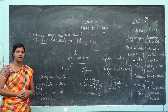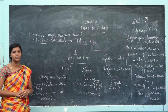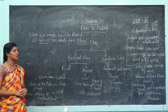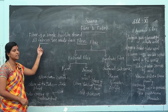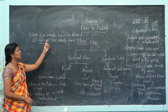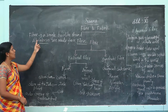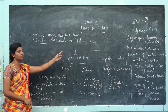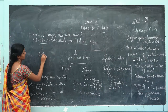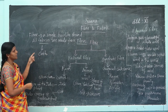Good morning students. In last class, we have learned about types of fiber and their sources. Let me recall the previous topic. What is fiber? A fiber is a single hair-like strand. All fabrics are made from fiber. What is fabric? Fabric means cloth.